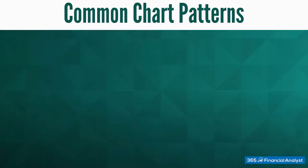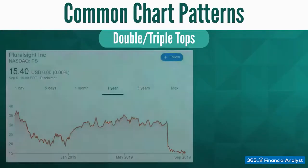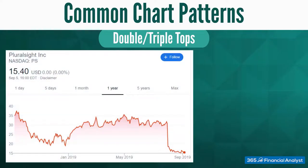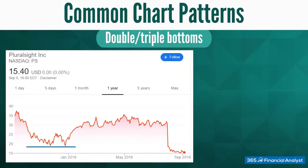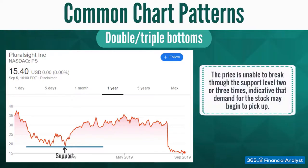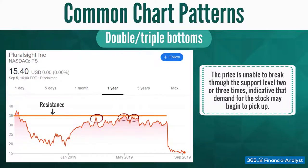The next types of patterns we'll consider are double tops and bottoms and triple tops and bottoms. The idea behind double or triple tops is that if a stock doesn't manage to overcome a resistance two or three times, buying demand is weaker and fading and a significant downward move is about to occur. Double or triple bottoms indicate that the support level is very strong — price is unable to break through the support level two or three times, indicative that demand for the stock may begin to pick up. Here is an example of a stock that struggled to break through the $35 resistance line multiple times and eventually decreased significantly.